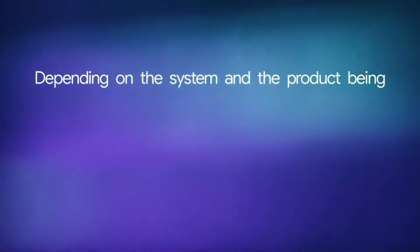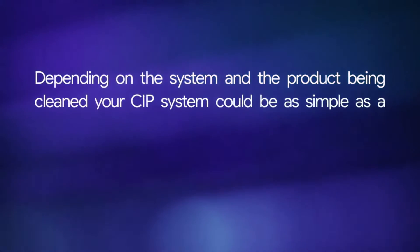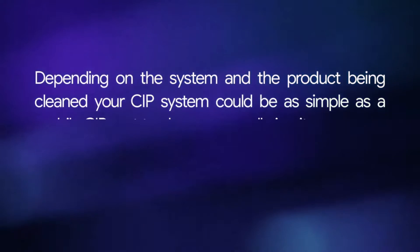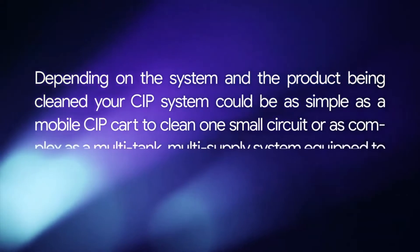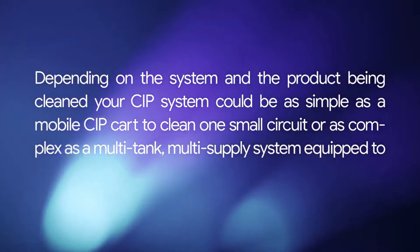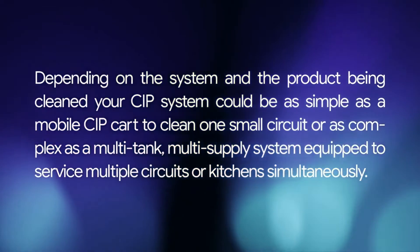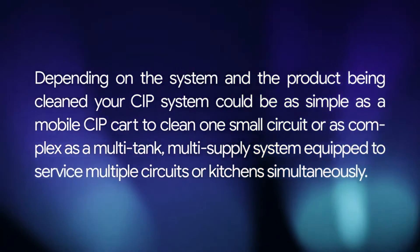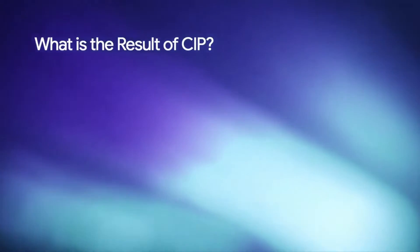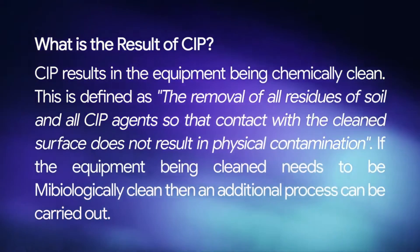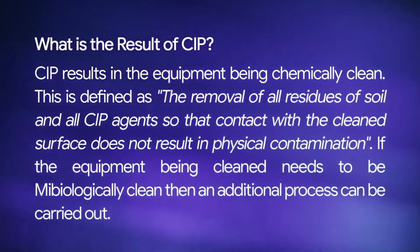Depending on the system and the product being cleaned, a CIP system could be as simple as a mobile CIP cart to clean one small circuit, or as complex as a multi-tank, multi-supply system equipped to service multiple circuits or kitchens simultaneously. The result of CIP is equipment that is chemically clean.